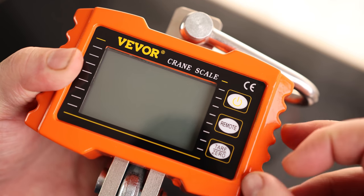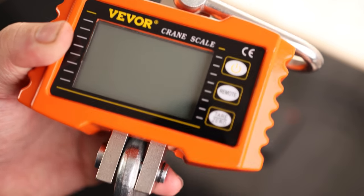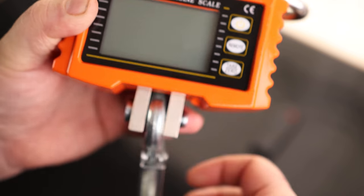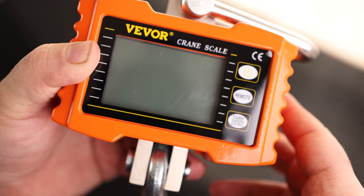So we've got power, remote, and then tare zero. So if you want to zero this, for example, if you're going to be lifting something that's holding something, you can put that on there, then hit the zero, and that way you'll be able to weigh whatever that is holding.